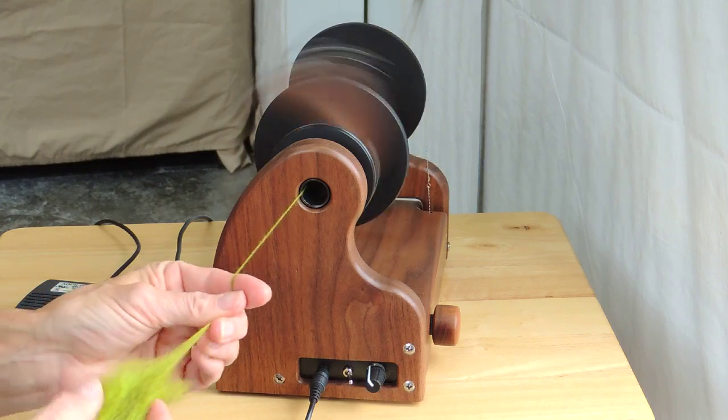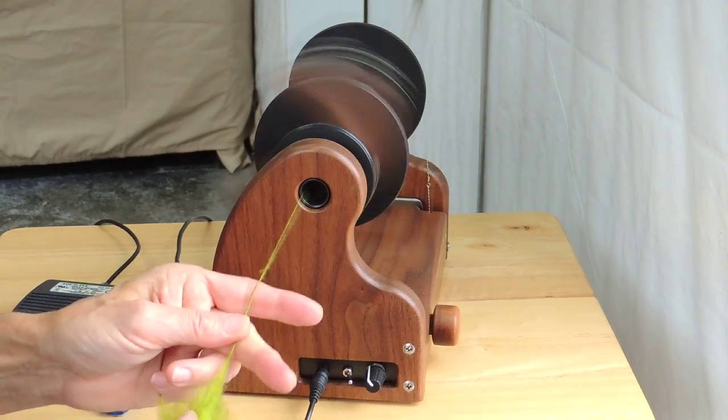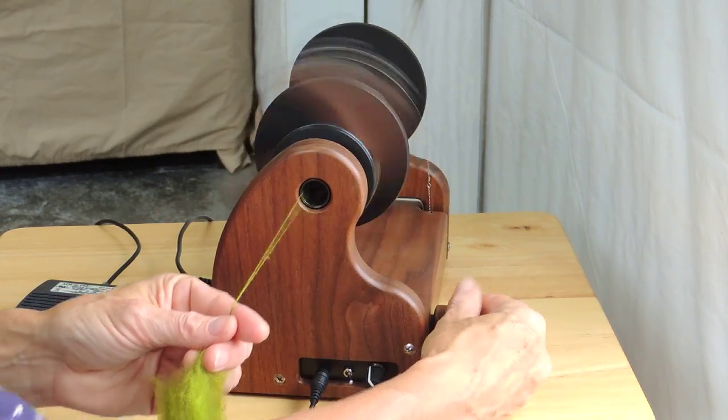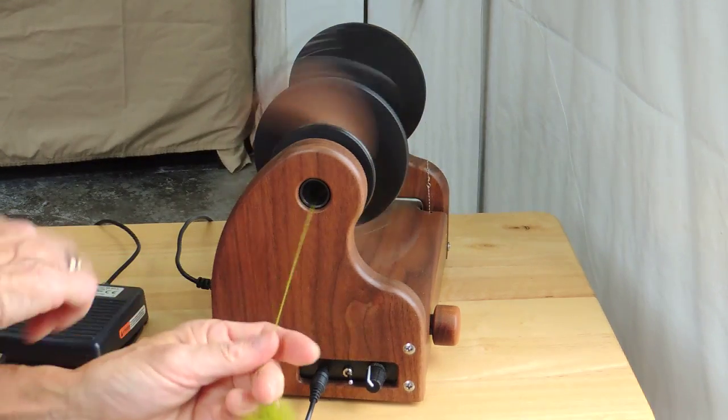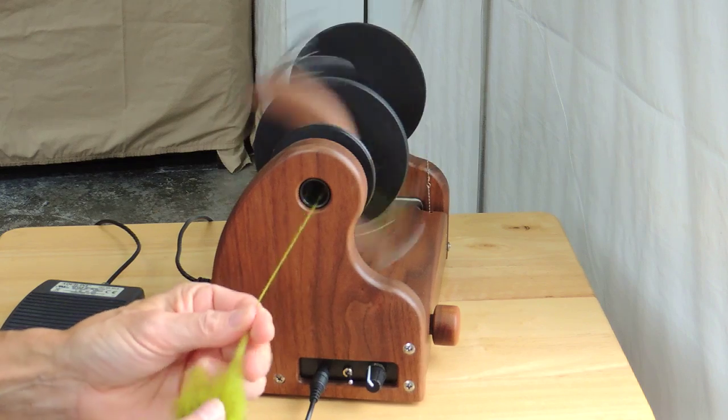If I need to adjust the tension for a lighter or stronger draw in I do that right here with the Scotch tension knob. And again I would just tap to turn it off.